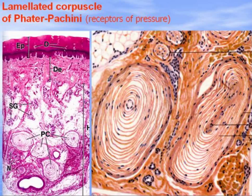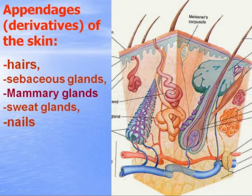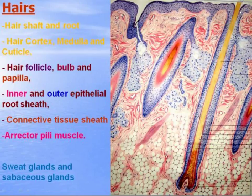Lamellated corpuscles of Vater-Pacini are located in the deeper portion of skin and function as receptors of pressure. The appendages or derivatives of skin include hairs, sebaceous glands, mammary glands (to be studied in the female reproductive organs unit), sweat glands, and nails. Hairs consist of a hair shaft above the surface of skin and a hair root inside the skin, surrounded by a hair follicle with an extension, bulb, and papilla.